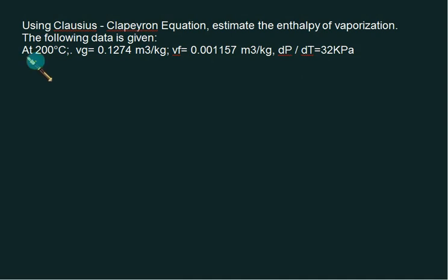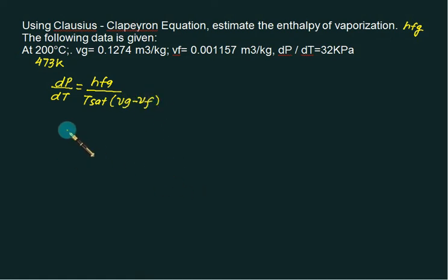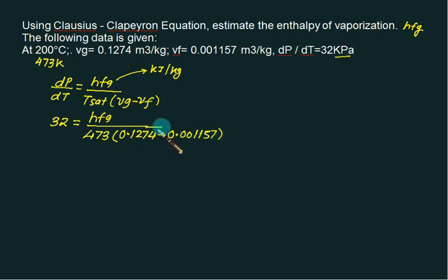Using the Clausius-Clapeyron equation, we find the enthalpy of vaporization hfg. Given T = 200°C (473 K), vg and vf are provided, and dp/dt = 32 kPa/K. Substituting into dp/dt = hfg / (T_sat × (vg − vf)): 32 = hfg / (473 × (0.1274 − 0.00157)). Solving gives hfg = 1910 kJ/kg.